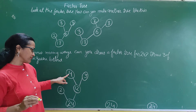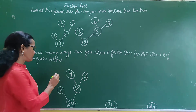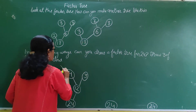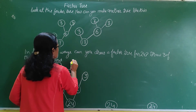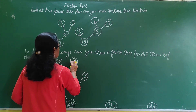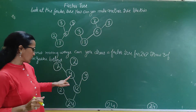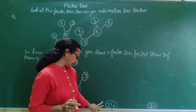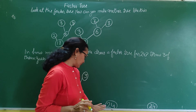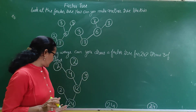Now we can break 4. So 2 twos are 4. So right here write 2 and 2. 2 twos are 4. Now this is one way to make the factor tree of 24.